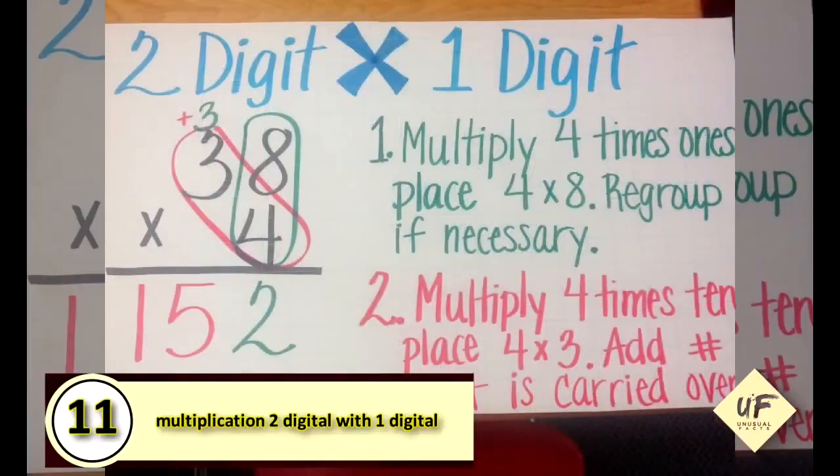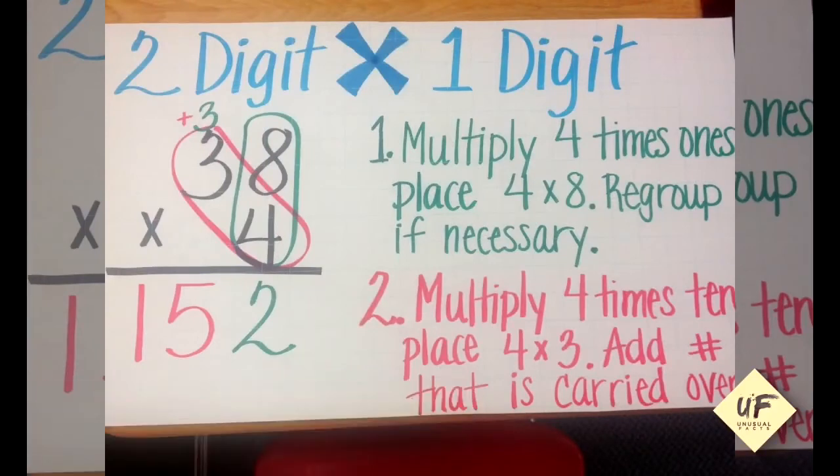Number 11: multiplication, two-digit with one-digit. Here's an easy way to remember how to multiply a two-digit number with a one-digit number. Here we have 38 times four. First, multiply four times the ones place—so four times eight—then regroup if necessary.